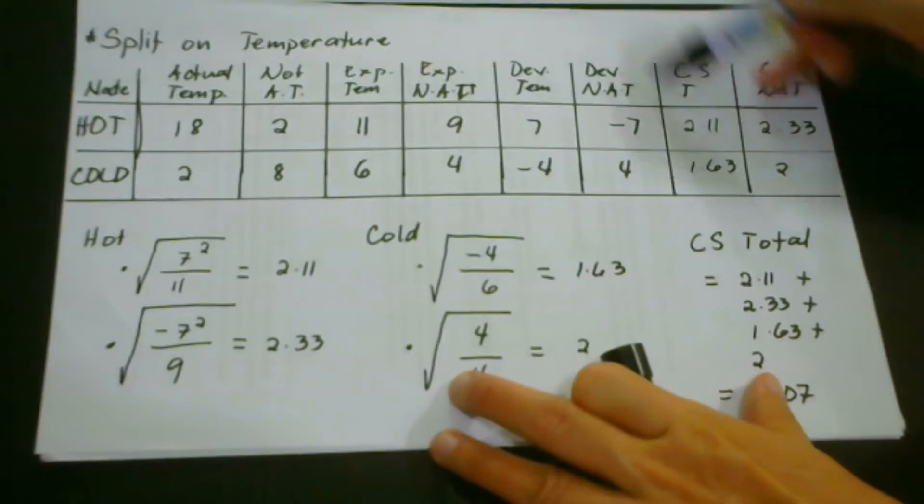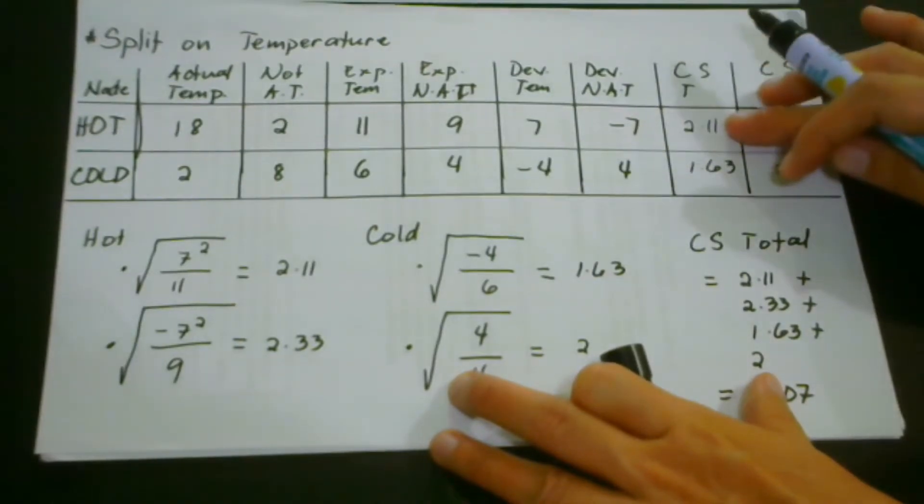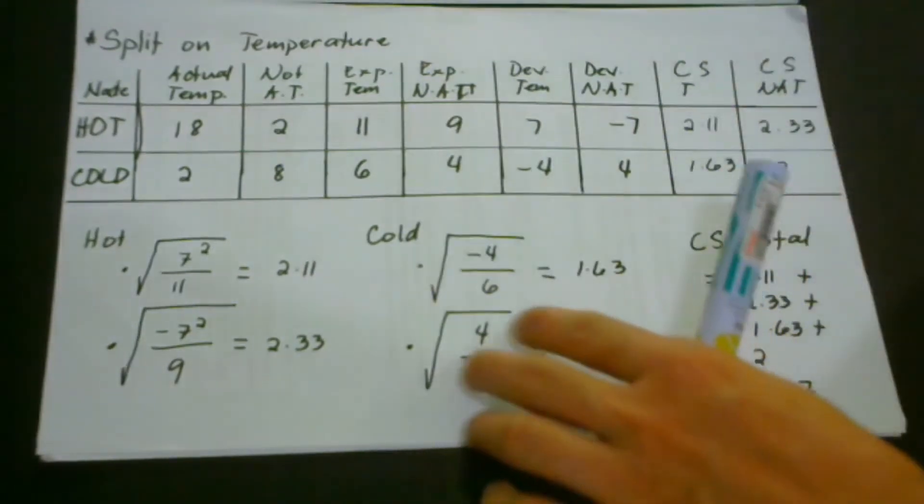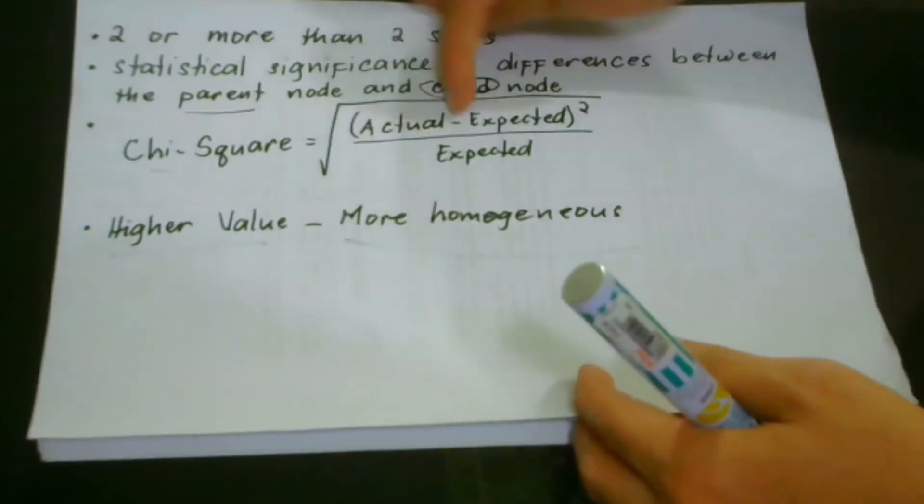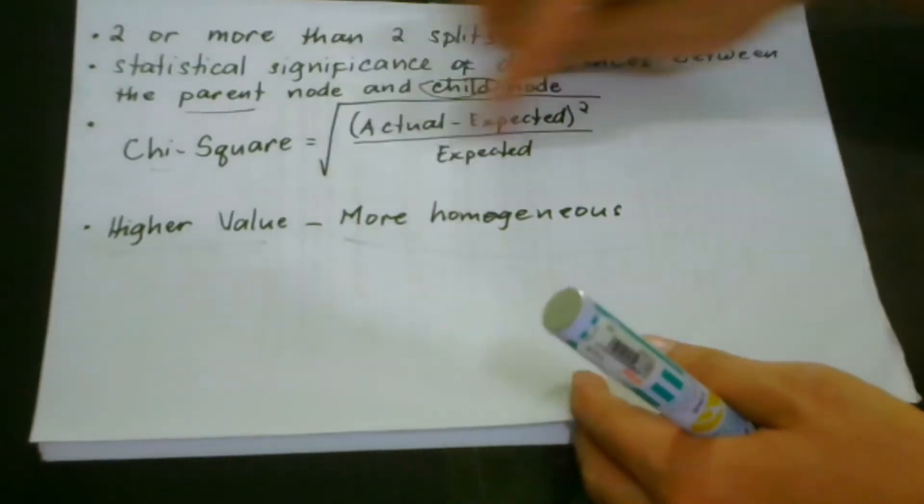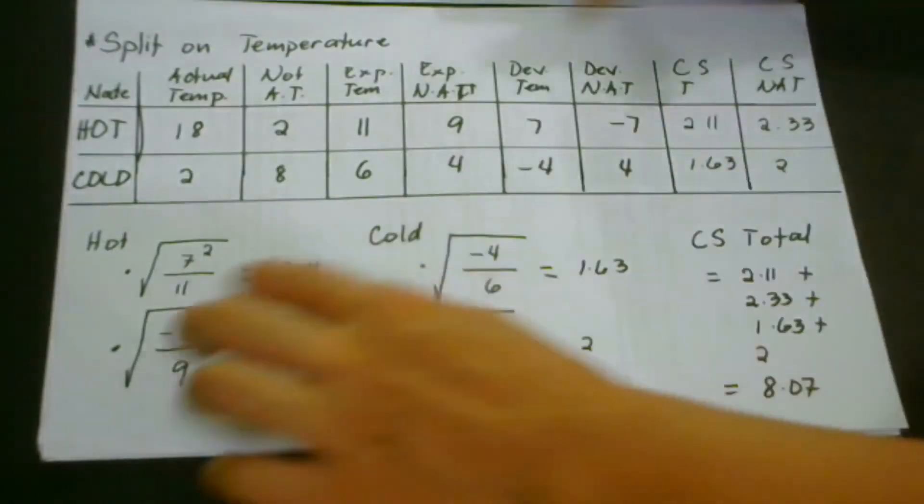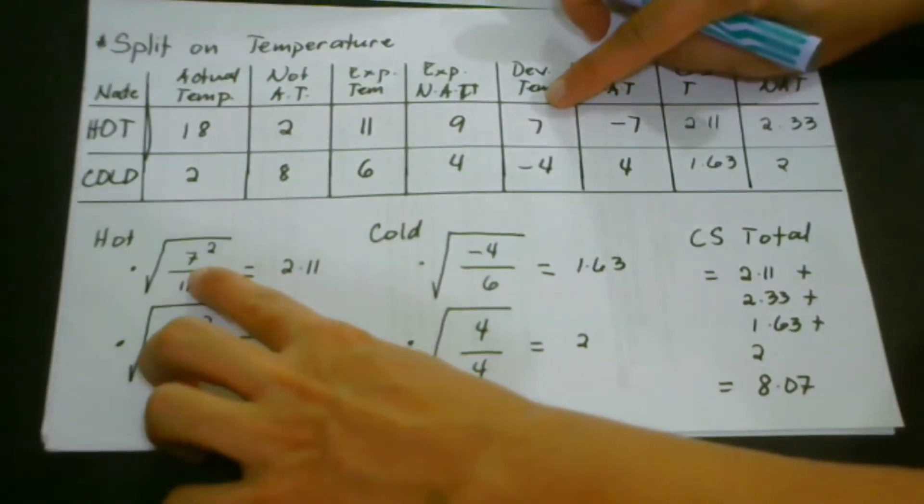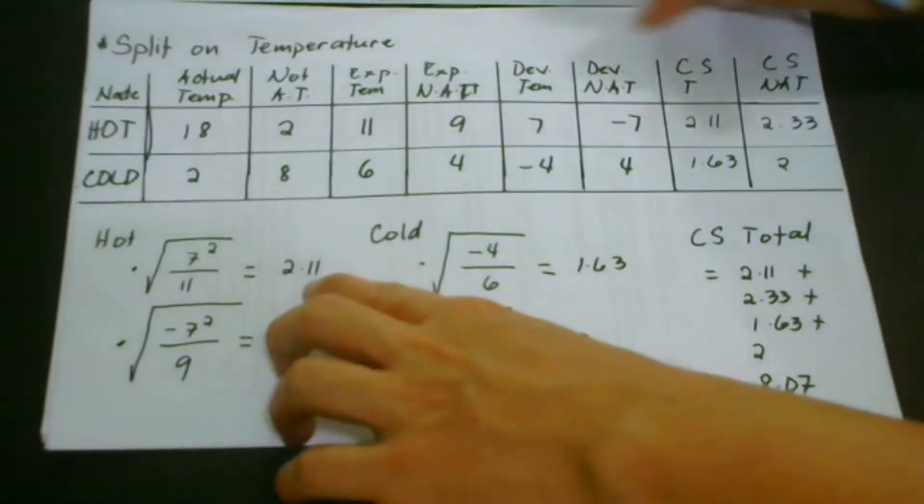And so after identifying these values, what we will do next is that we're going to get the chi-square value of each one. So to do that, we simply plug in the values in this formula. So the actual minus expected, then we square that and then divide it by the expected value. So we have seven as you could see, we square that, then divide it by eleven, and then we get 2.11.